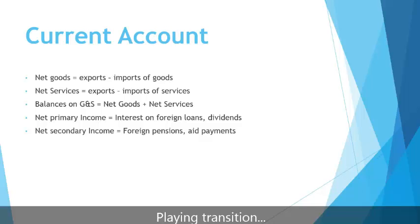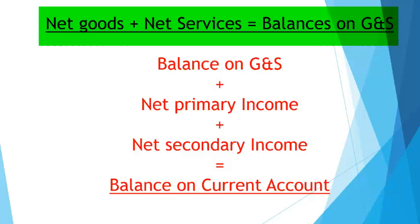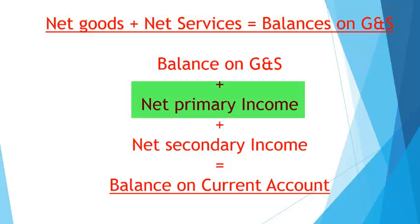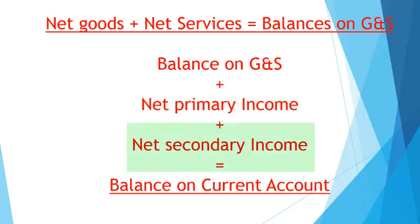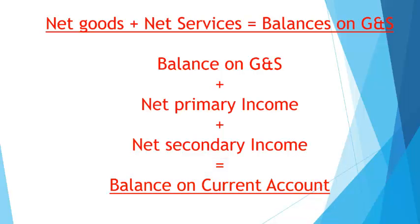There are a number of mathematical relationships here. Net goods plus net services equals the balance on goods and services. When we add net primary income and net secondary income to that, we get the balance on current account. As I indicated, net primary income is made up largely of interest payable on foreign loans, and Australia has billions and billions of those. That means our balance on current account is always in deficit — hence the term CAD.